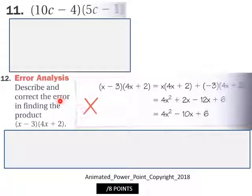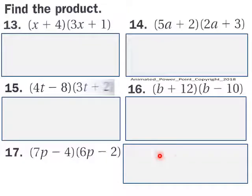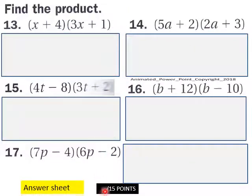Error analysis, describing correct and describing correct down here in this space here for this product there. You got eight points here for page five. Page six, find the products here for all these products and you got 15 points here for page six.